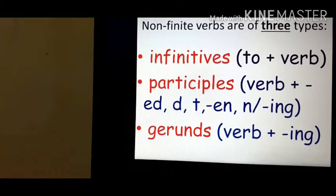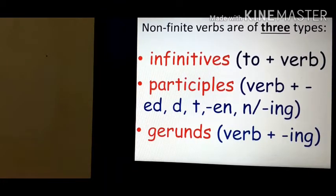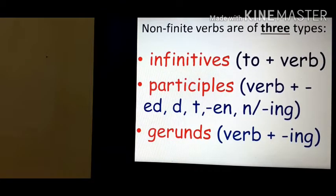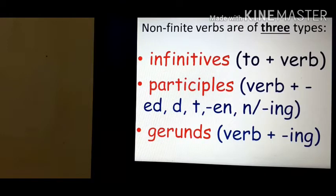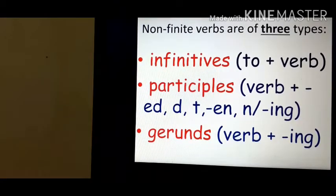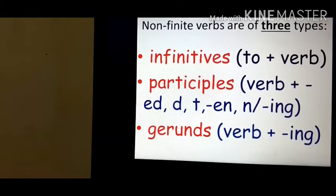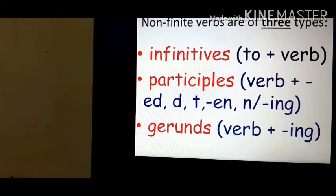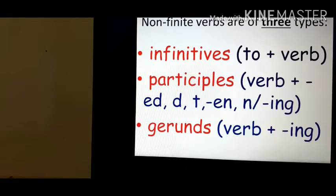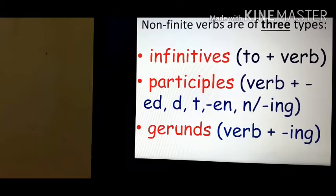Infinitives — the structure is 'to + verb.' Participles are of three kinds: present participle, past participle, and perfect participle. The structure is verb + ed, d, t, n, or ing. And the structure of a gerund is verb + ing.